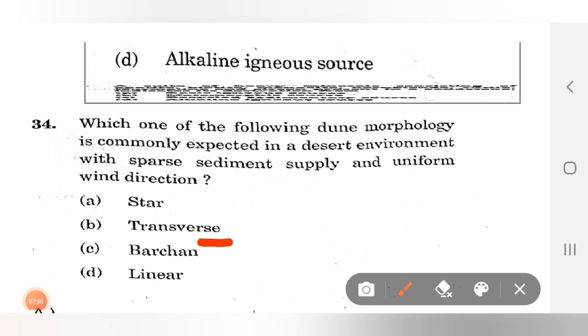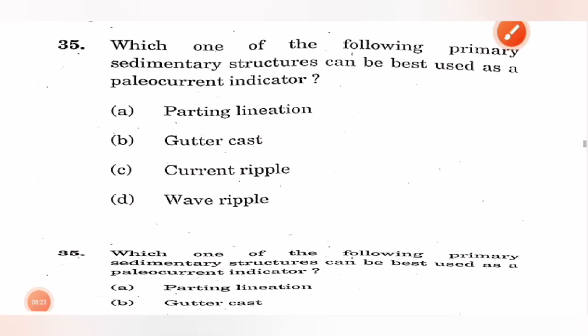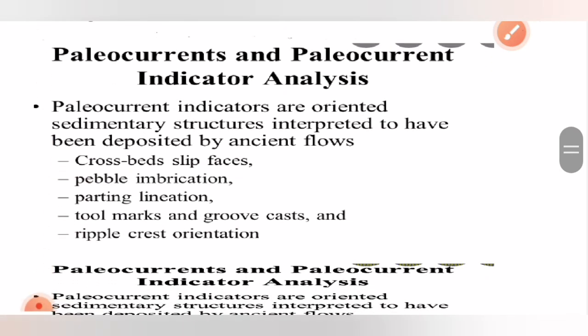Which one of the following primary sedimentary structures can be best used as a paleocurrent indicator? It is parting lineation. Paleocurrent indicator - I have pasted this picture just for reference, you can read it out.